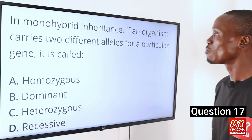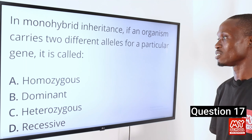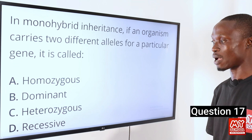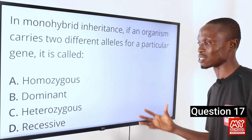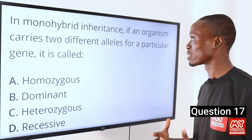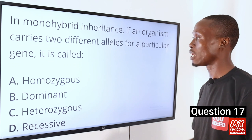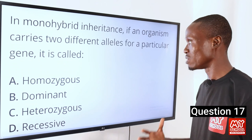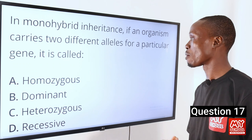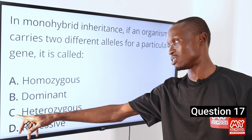Question 17. In monohybrid inheritance, if an organism carries two different alleles for a particular gene, it is called — A, homozygous; B, dominant; C, heterozygous; D, recessive. The answer is option C, heterozygous. A heterozygous organism carries two different alleles for a particular gene, where one allele can be dominant while the other is recessive. Homozygous, by contrast, refers to an organism carrying two similar alleles for a particular gene.